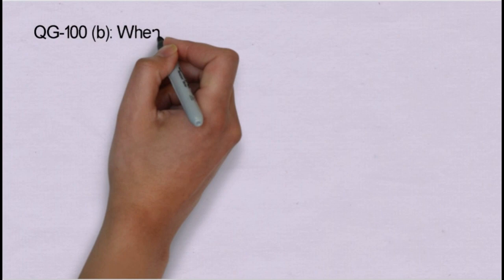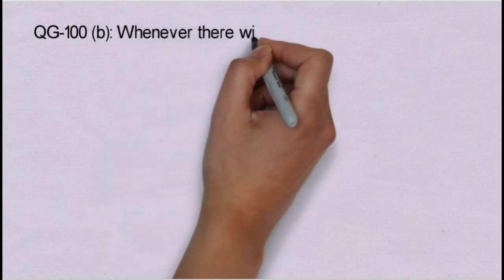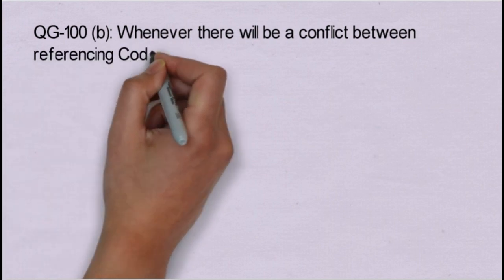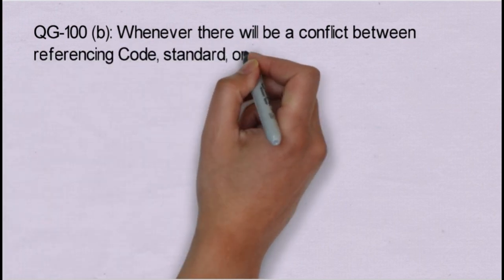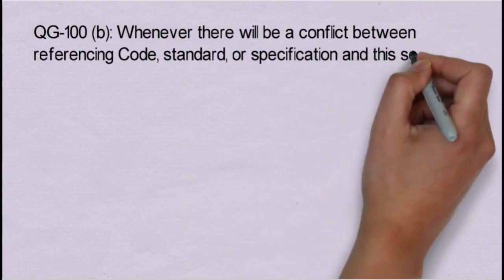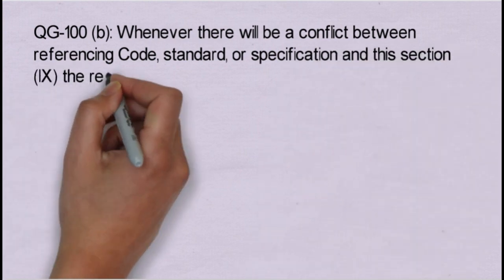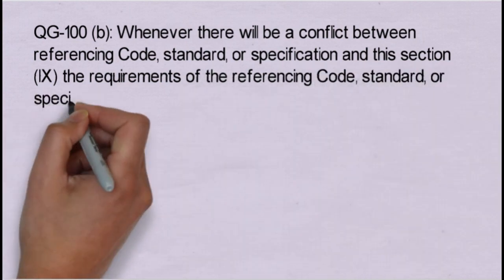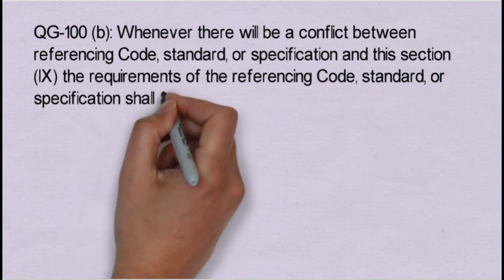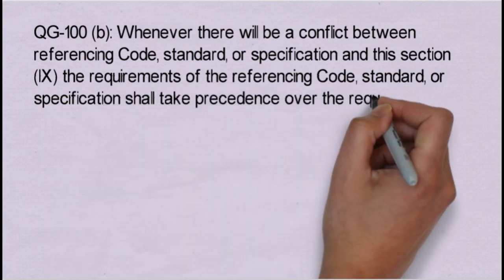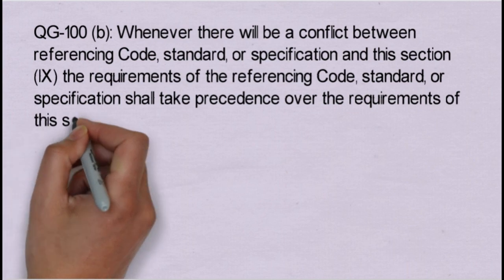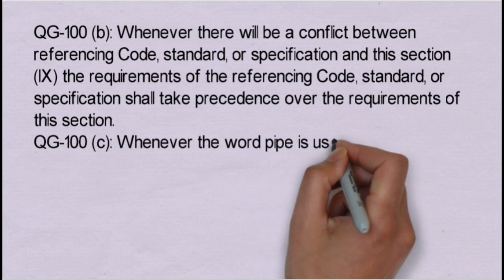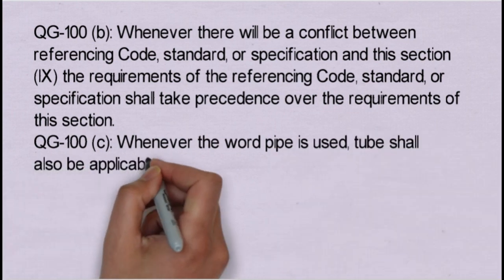Further, the scope has five parts. Under QG100B, whenever there is a conflict between a referencing code, standard or specification and Section 9, the requirement of the referencing code, standard or specification shall take precedence over the requirement of Section 9. Similarly, QG100C states that whenever the word 'pipe' is used in the code, 'tube' shall also be applicable — so both are the same item.